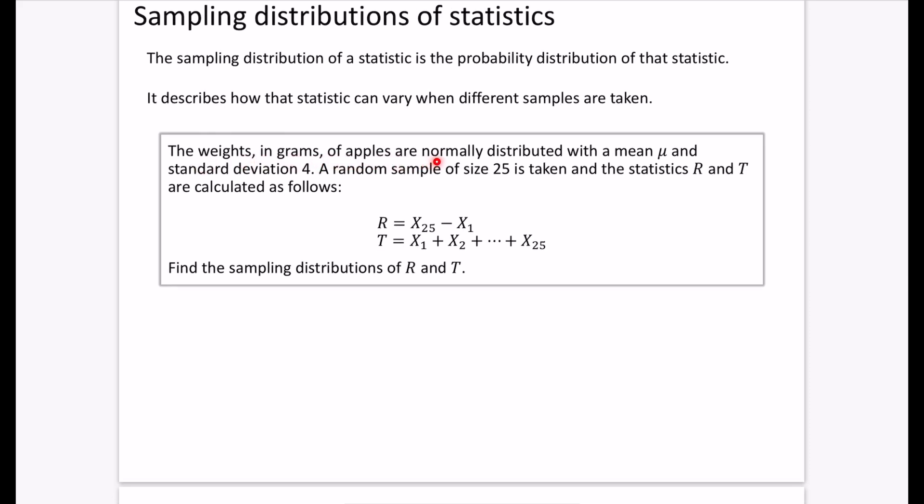The weights in grams of apples are normally distributed with mean μ and standard deviation 4. So X ~ N(μ, 4²). A random sample of size 25 is taken and statistics R and T are calculated as follows. R is x₂₅ minus x₁ - the 25th apple selected minus the first apple selected. It's not the range, just the difference between the 25th and first picked.